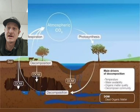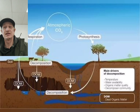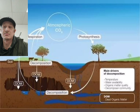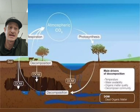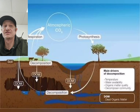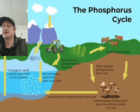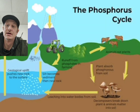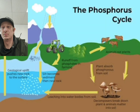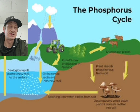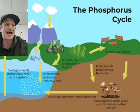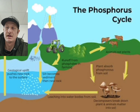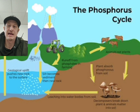Third, we have uptake and recycling, where plants absorb the phosphorus into their tissues, and once those plants die and decay, that phosphorus is released back into the soil, completing the cycle. Mineralization through weathering is another process that happens through natural occurrences like weather and rain.